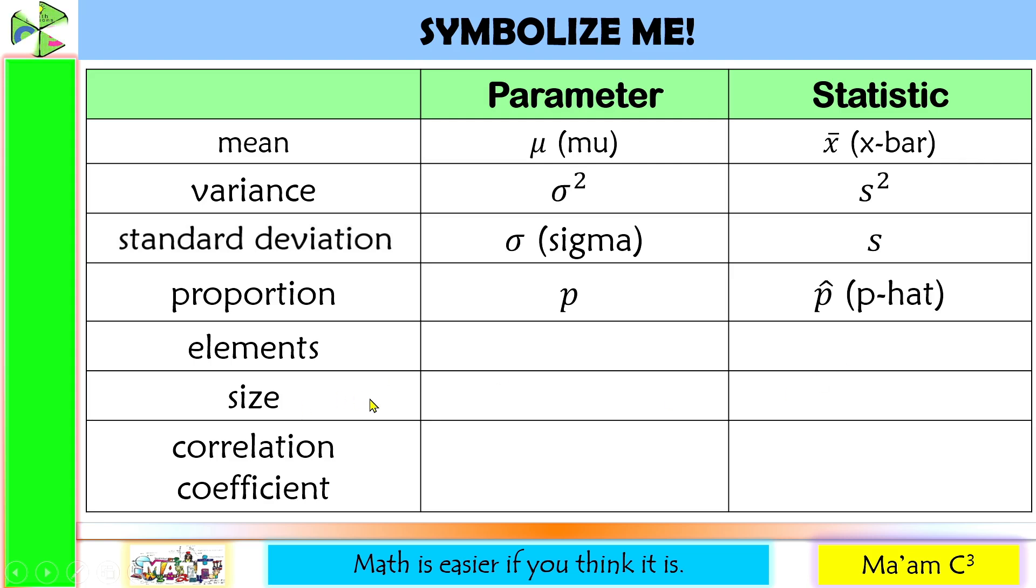For the elements in parameter, we use x. And for statistic, small letter x. For the size in parameter, we use capital N. And for statistic, we use small letter n.